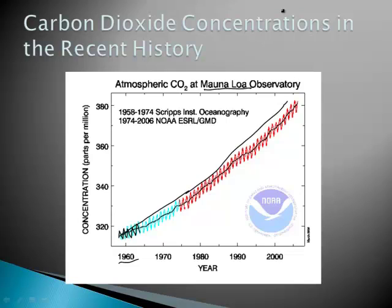The measurement is in concentration parts per million. In 1960, there were 320 parts per million. Now, around 2010, we're up to 380. Not a huge jump, but a jump nonetheless.